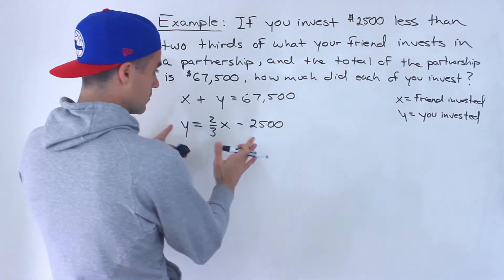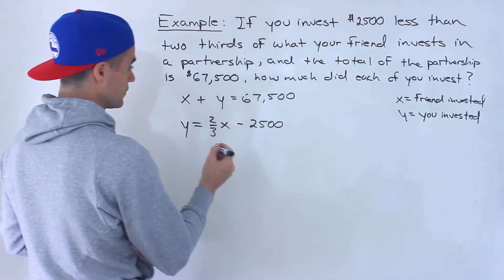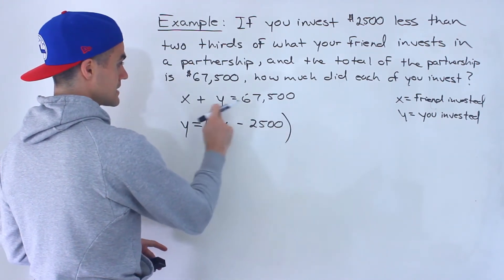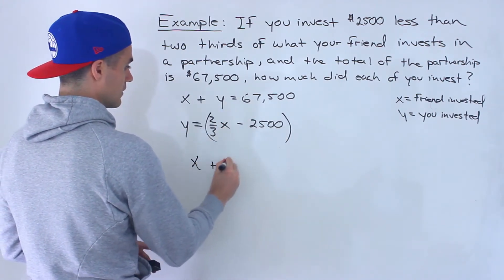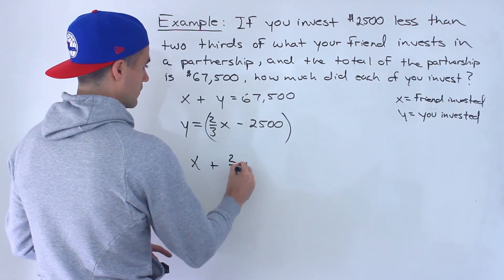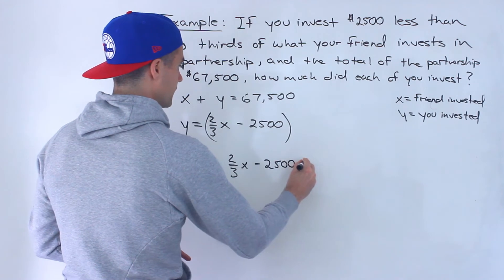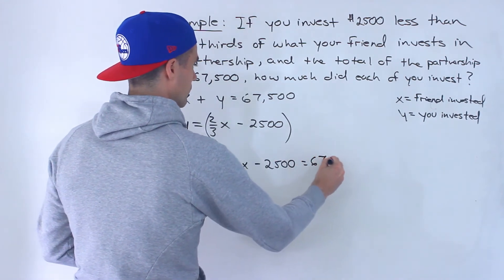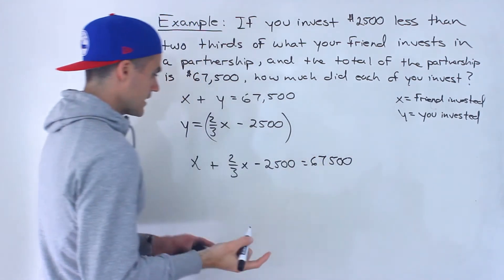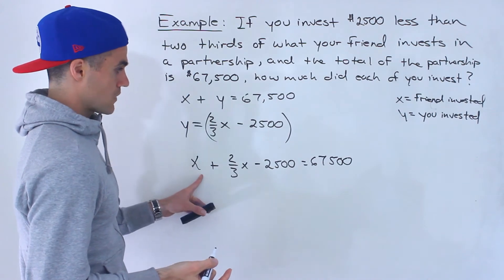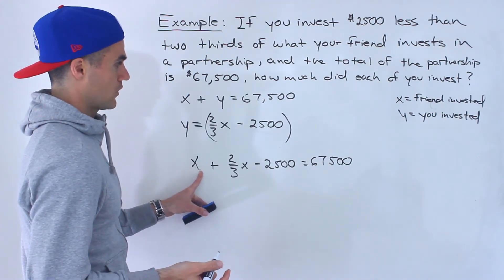And notice now we got two equations, two unknowns. So the y is already isolated. We could take this and plug it in here. And then what we can do is we can solve for x. Notice we have an equation here where we could solve for x.